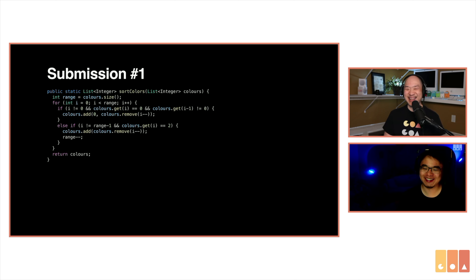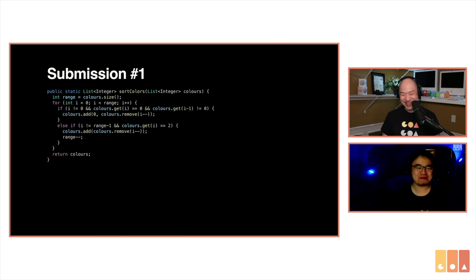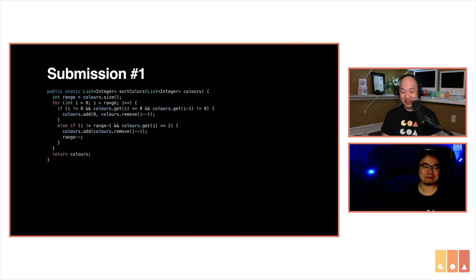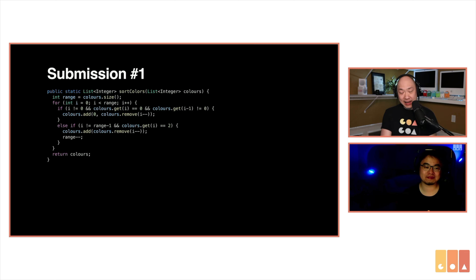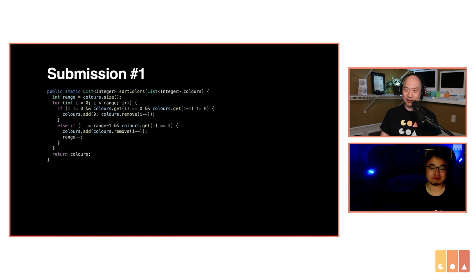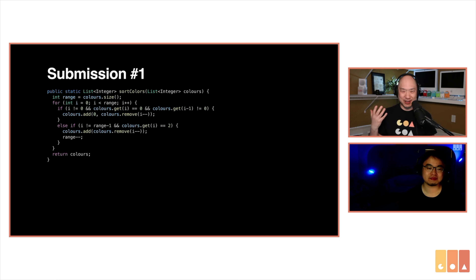But we didn't set time complexity constraints — the constraint was O(1) space, so it does meet it. It is very expensive to be moving items around in an array and shifting each time you add to the beginning. But the thing I like about this is it's very easy to understand — if you were given an unsorted list, this is how you would sort it physically: take all the zeros, put them on the left side; all the twos, put them on the right side.